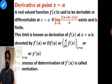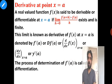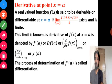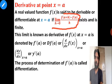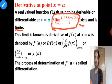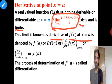Derivative at a point x equal to a: a real valued function f(x) is said to be differentiable or derivable at x equal to a if the limit as h tending to 0 of [f(a+h) minus f(a)] upon h exists and is finite. This is the first principle derivative that you have learned in 11th standard. This limit is known as the derivative of f(x) at x equal to a.